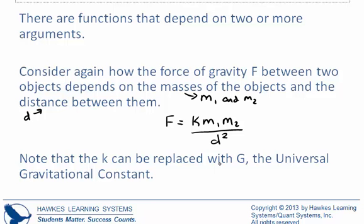Now we want to note that in this equation, the k can be replaced with G, which is the universal gravitational constant. G has been determined to be approximately 6.67 times 10 to the negative 11th power. And so if we want to, or if it is appropriate for the problem, instead of solving for k, we can simply use G in its place.